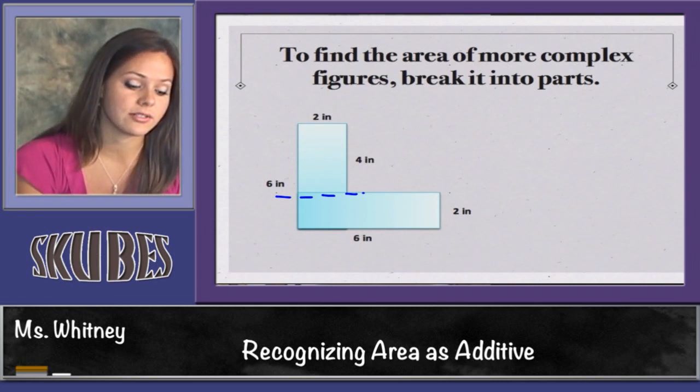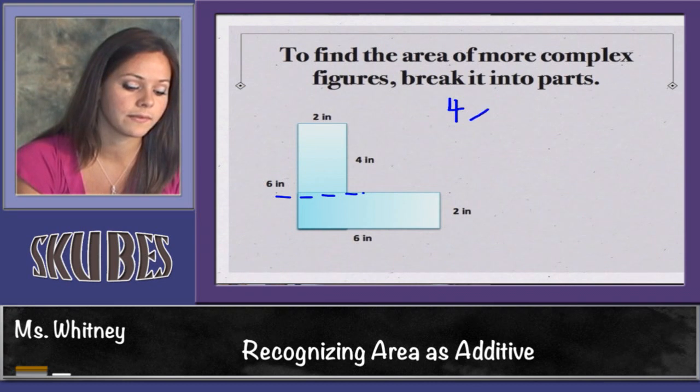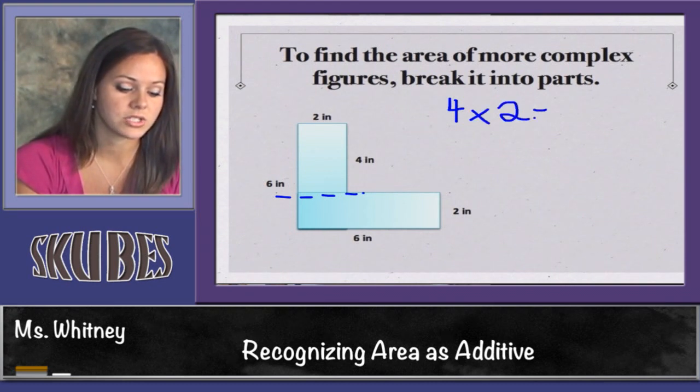So let's start with the first rectangle on top. I can multiply 4 times 2, which equals 8.